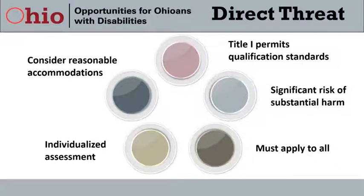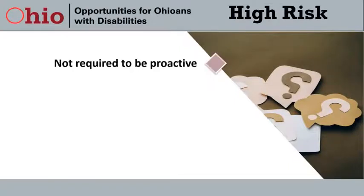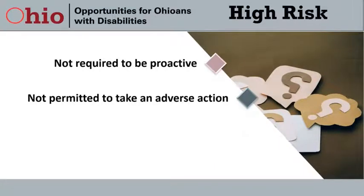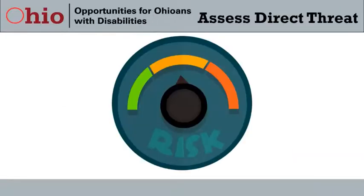Contracting COVID-19 could pose a direct threat to the health of an individual. However, employers are not required under the ADA to be proactive if the employee has not requested a reasonable accommodation. The EEOC says an employer is not permitted to take an adverse action against an individual solely based on the individual having one of the conditions the CDC has identified as potentially putting them at a higher risk if they contract COVID. If an employer knows an employee has one of these conditions and is concerned about a direct threat, they cannot assume a direct threat exists solely based on that condition.